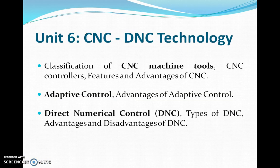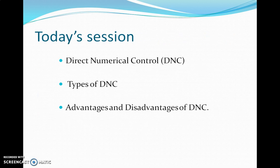We are discussing unit number six, which is CNC and DNC technology. In this unit we have covered the CNC part and the adaptive control part. In this session we will try to cover the last part of this unit, which is direct numerical control — what is DNC, what are the different types of DNC, and its advantages and disadvantages.